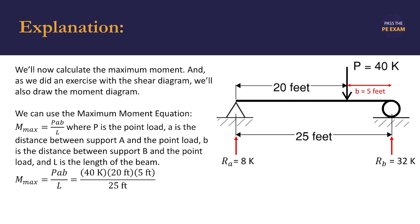We substitute our known values: 40 kips for P, 20 feet for A, 5 feet for B, and 25 feet for L. We find the maximum moment to be 160 kip-feet.